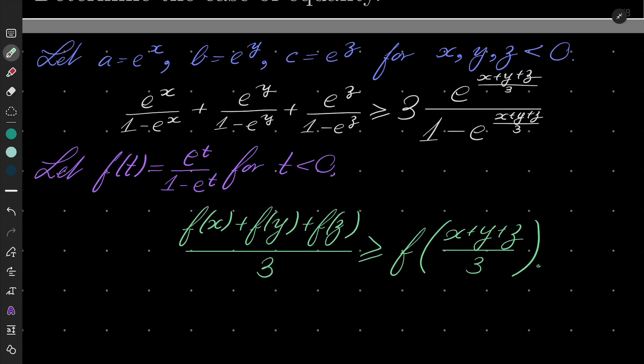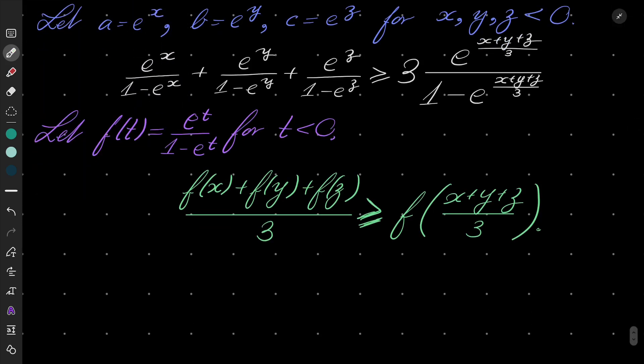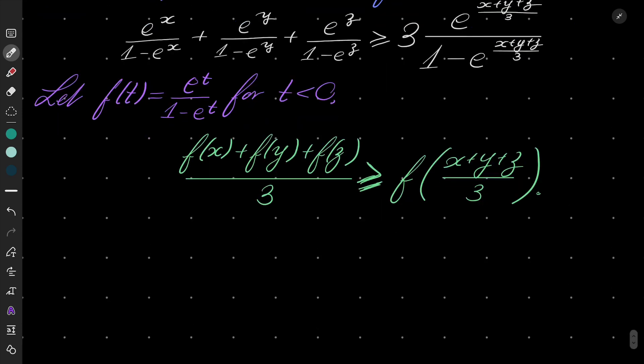If our function is convex, this inequality is implied directly by Jensen's inequality. So the only thing to do now is to check if our function is convex. How to do it? By differentiation, of course.